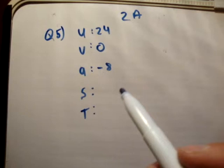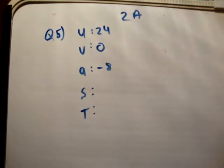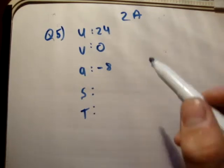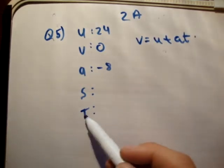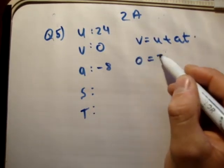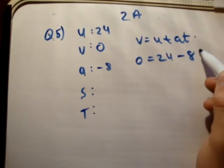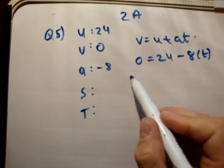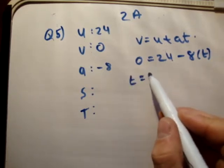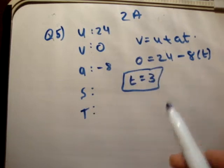What do we do? We use the formula V equals U plus AT. That will work because the only variable we're missing is T. So 0 equals 24 minus 8 times T. Remember it's negative 8. Therefore T equals 3. So T is equal to 3 seconds.